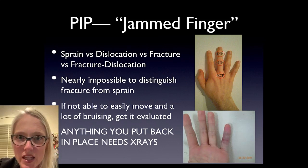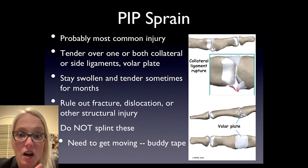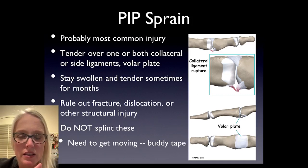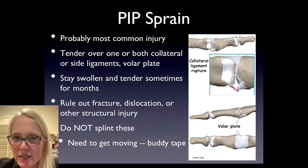I can't emphasize this enough: if you pop something back in or reduce anything, you've got to get x-rays. The sprain is the most common injury — you'll have tenderness over the side ligaments and often over the volar plate, the strong structure on the bottom of the knuckle, which gets stretched or torn when the finger is hyperextended. These will stay tender and swollen for months. But once you've ruled out fracture or other structural problems, it's really important not to splint these — they have to keep moving.